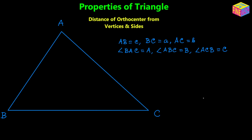We know that the orthocenter is the point of intersection of the three altitudes drawn from the three vertices. I am going to draw the altitudes one by one. Let's first draw the altitude from A onto side BC — let's call it AD, so AD is perpendicular to BC.